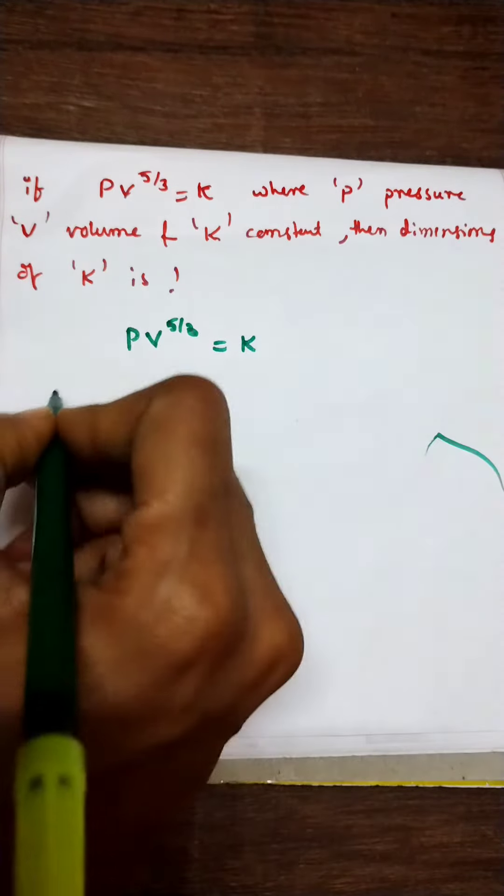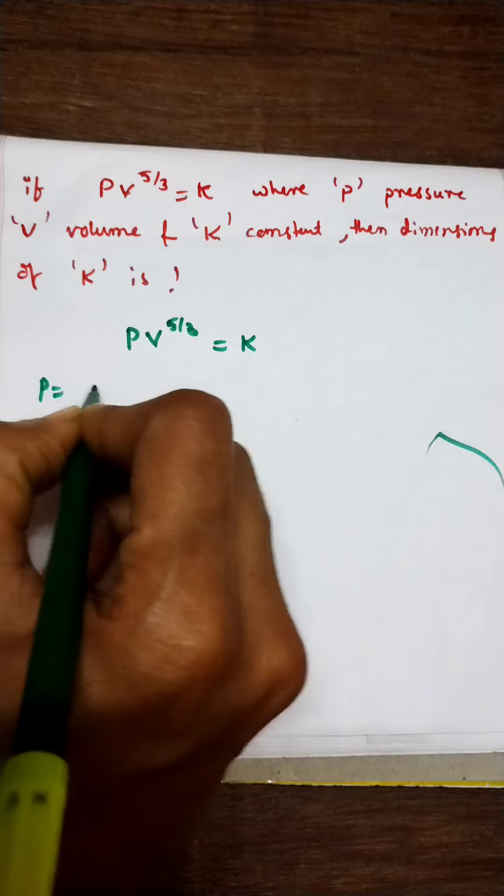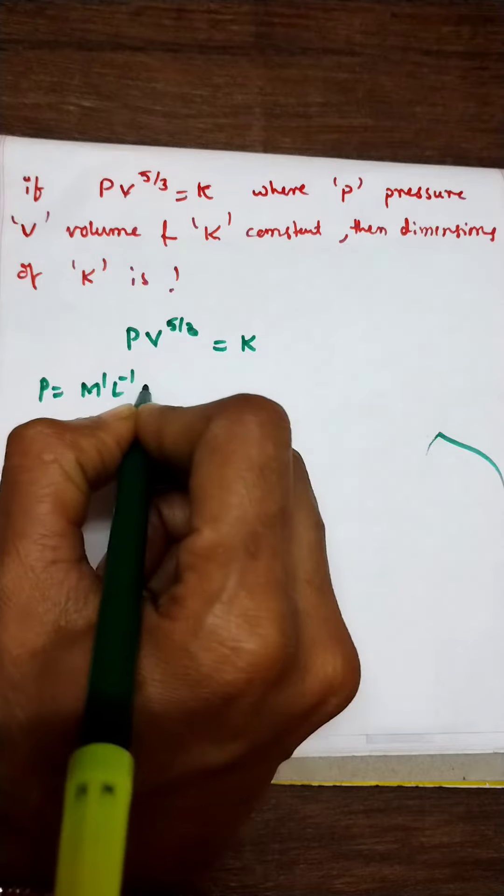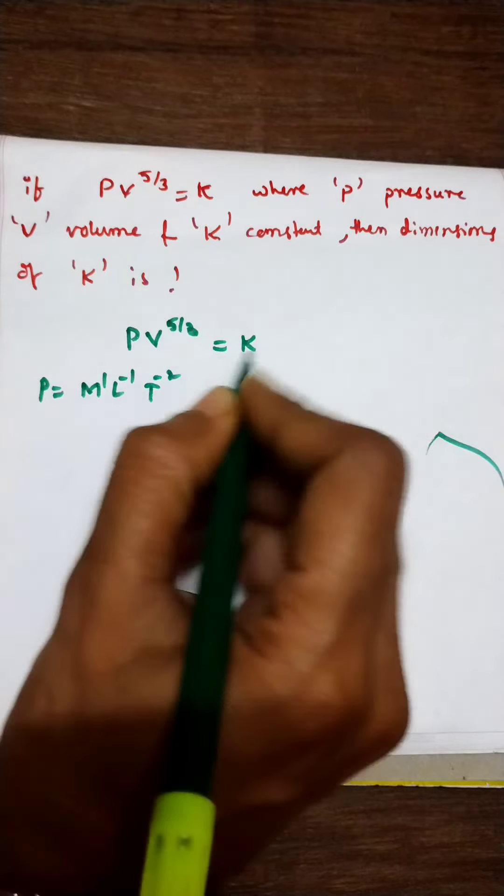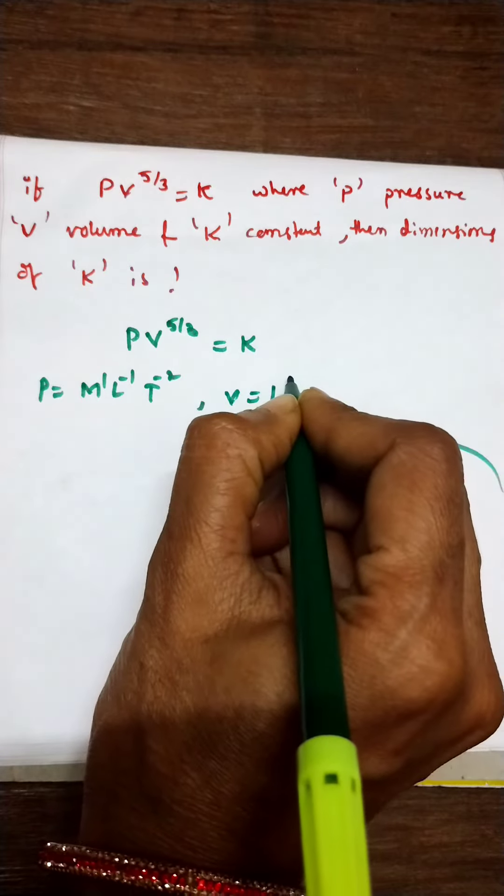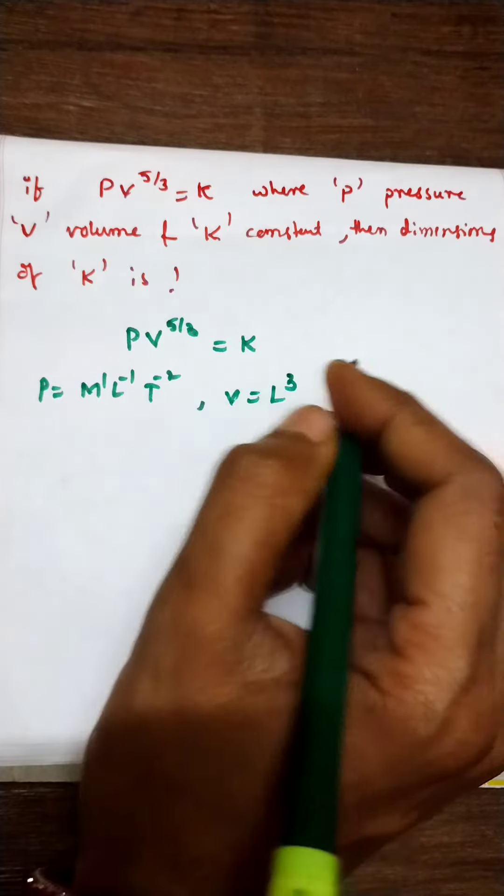The pressure dimension formula P equals M power 1, L power minus 1, T power minus 2, and volume dimension formula is L cube, that is length into length into length.